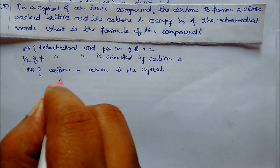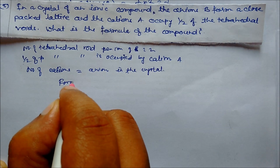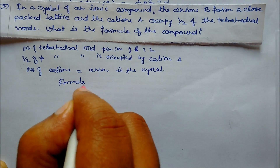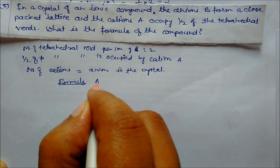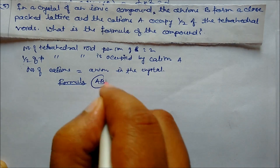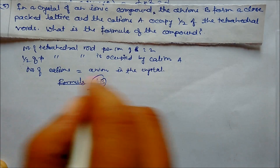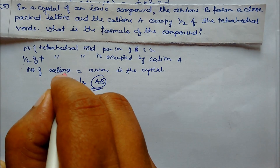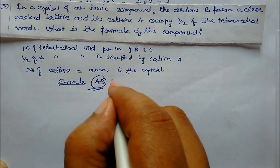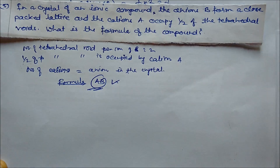Therefore, the formula is simply AB, since cation A equals anion B. Both are equal. So the formula is AB.